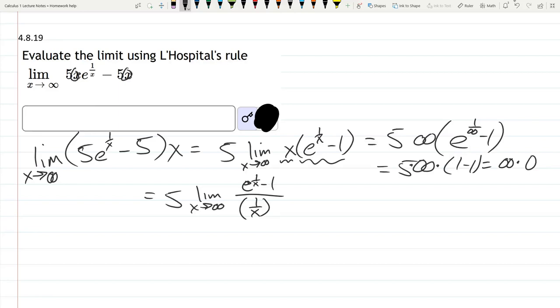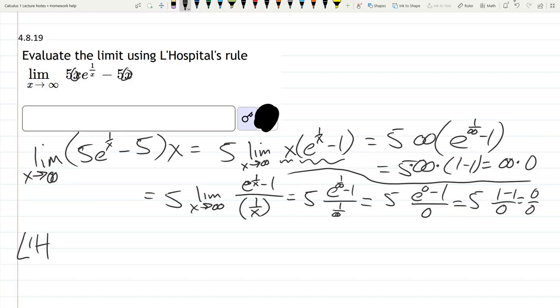Now we should be in a good form for L'Hospital's rule. We're going to plug in infinity: (e^(1/∞) - 1) over (1/∞). And of course 1/∞ is 0. So we have 5 times (e^0 - 1) over 0, which is 5 times (1 - 1) over 0, which is 0/0. And now we can use L'Hospital's rule.